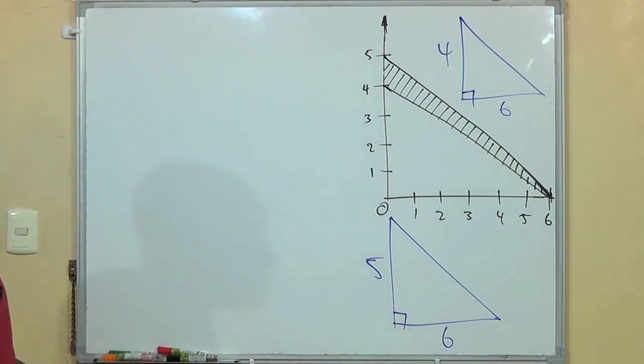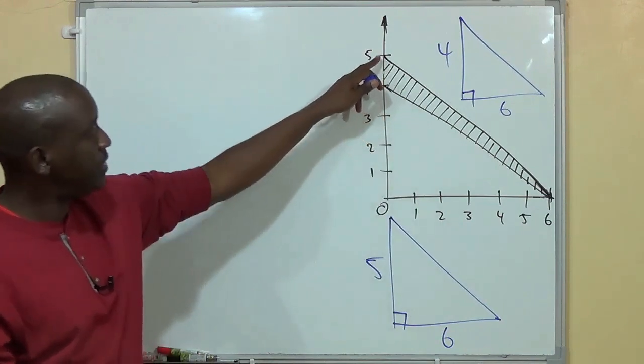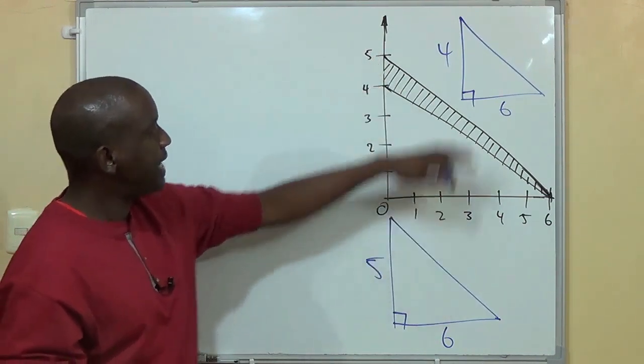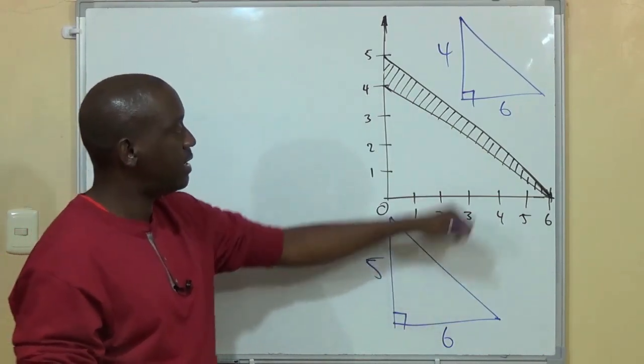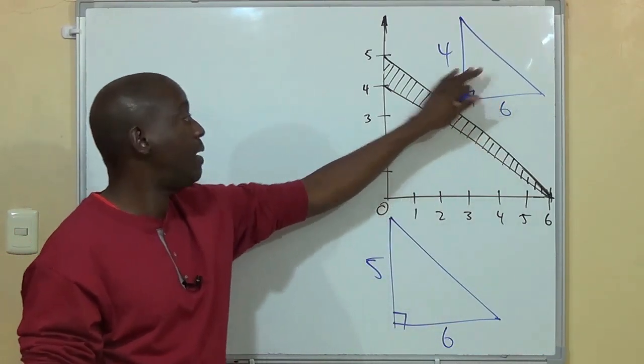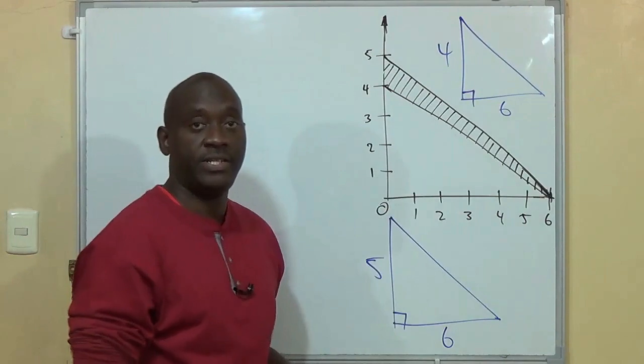So basically all we're looking to do is find the area of the big triangle which is up to 5, and then find the area of the small triangle which is up to 4. Area of big triangle minus area of small triangle - that's the area of the shaded region there.